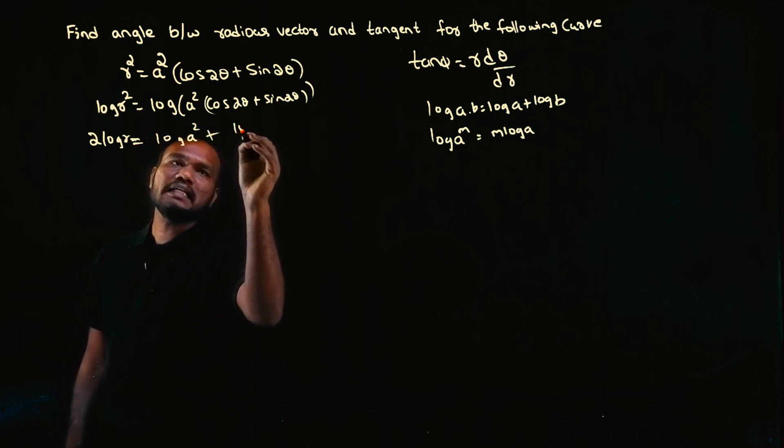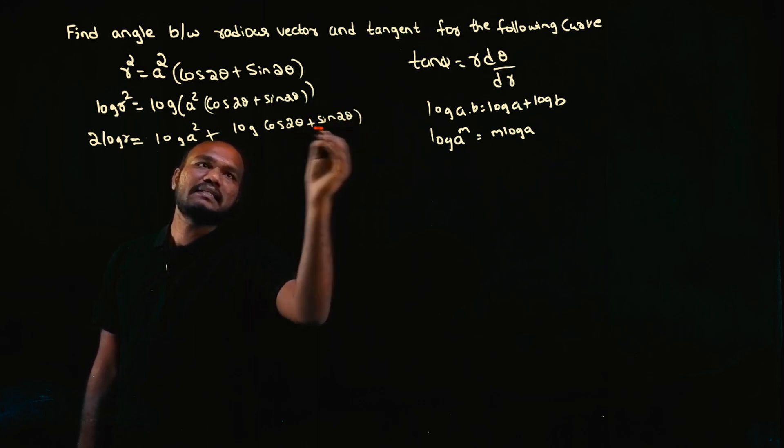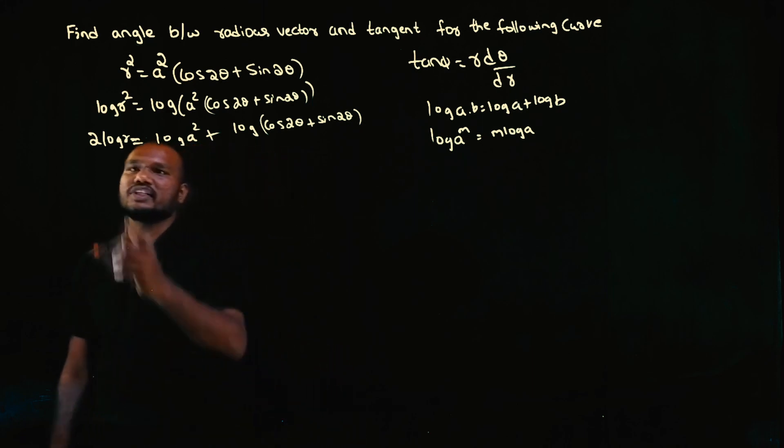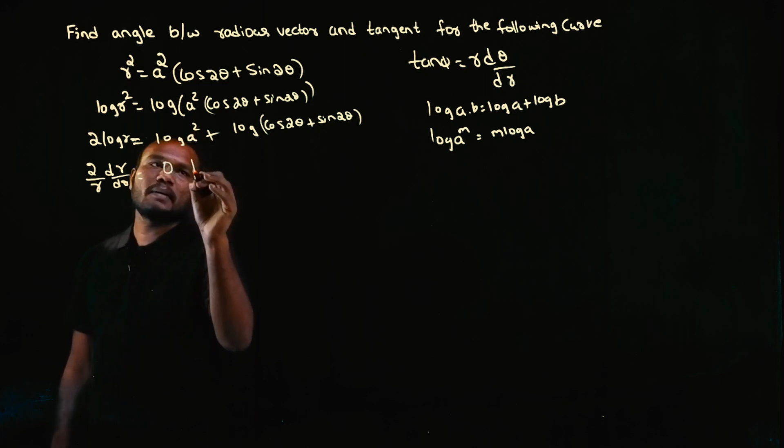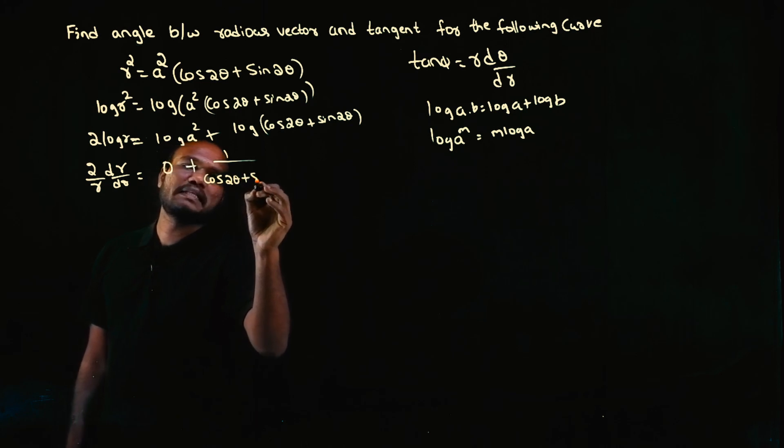Now let's differentiate. 2 log r differentiation is 2/r times dr/dθ. Log a² is a constant, so its derivative is zero. Log differentiation is 1/(cos2θ + sin2θ) times the derivative of the denominator.